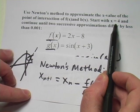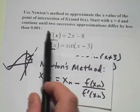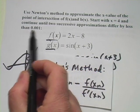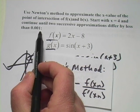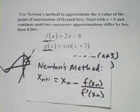In this case, they're telling us you're going to start with x = 4 and you're going to continue until you get something that differs by less than 0.001. The approximations differ by less than that.